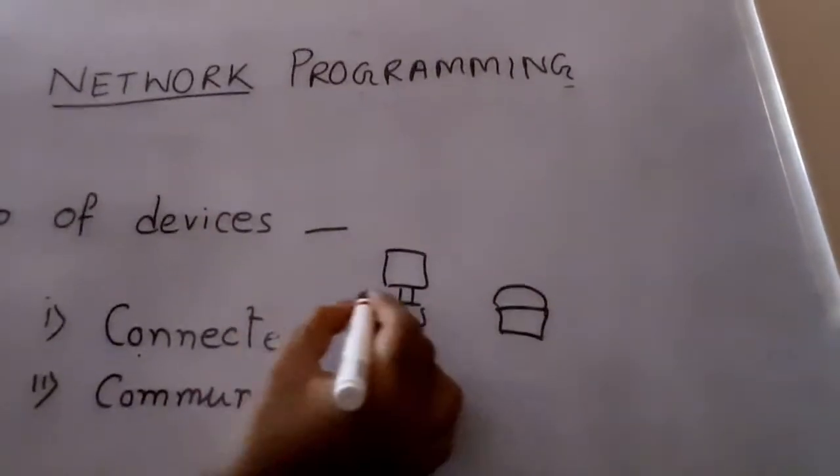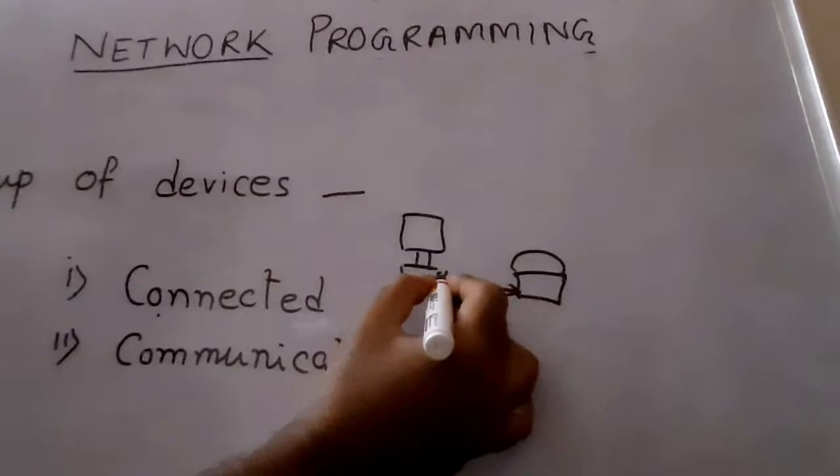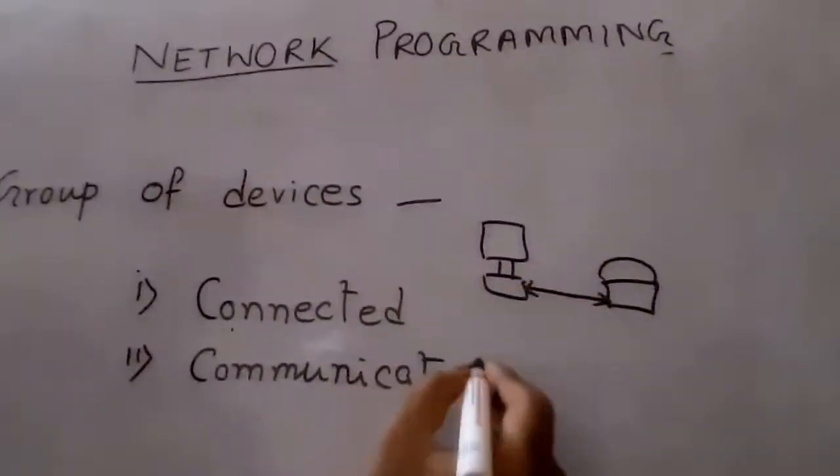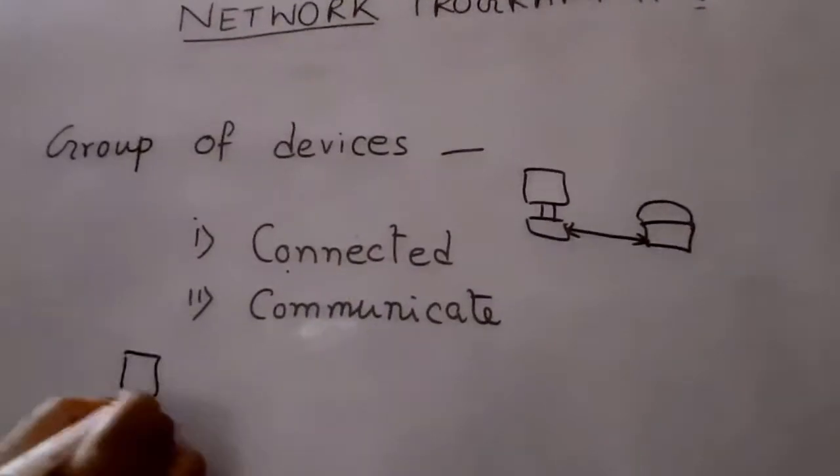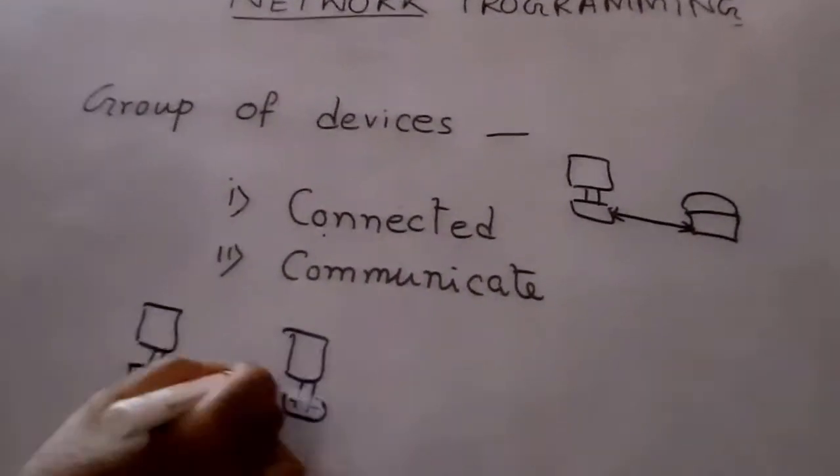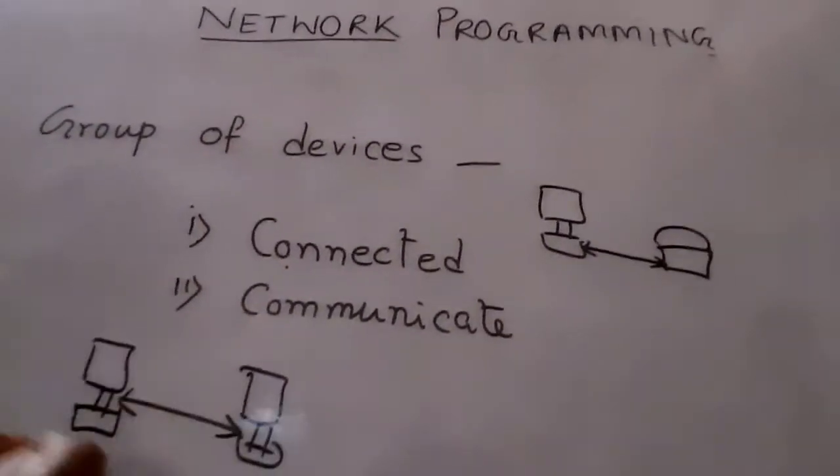When these devices are communicating, that is a network. When all these devices are computers, we call this a computer network. Computers communicating will form a network.